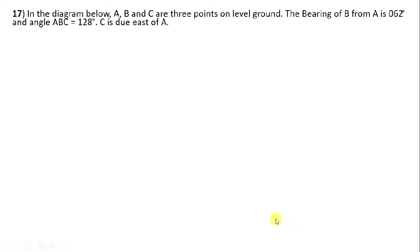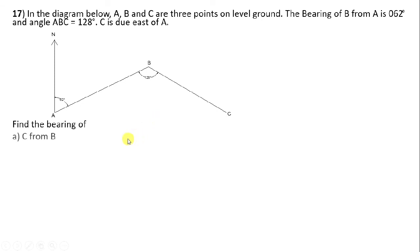Question 17: A, B, and C are three points on level ground. The bearing of B from A is 062 degrees, angle ABC is 128 degrees, and C is due east of A. Find the bearing of C from B. When they say 'from B', go to B and make reference to the north at B — we are looking for the angle from north at B to C.